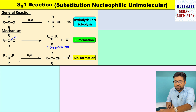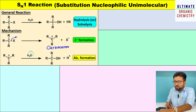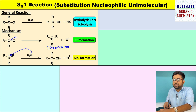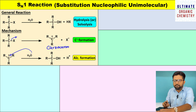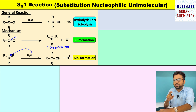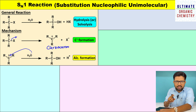The second step is that this carbocation reacts with the nucleophile — the water molecule. The water molecule's lone pair attacks the carbocation, and as a result, it leads to the formation of alcohol. The hydrogen of the water molecule leaves as H plus. So this step can be otherwise called as alcohol formation. In this SN1 reaction, the first step is formation of carbocation and the second step is formation of alcohol.